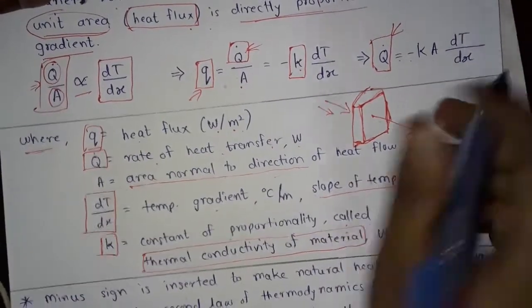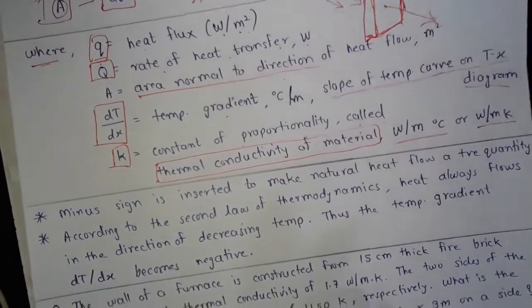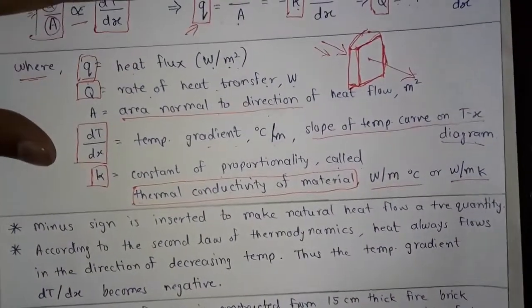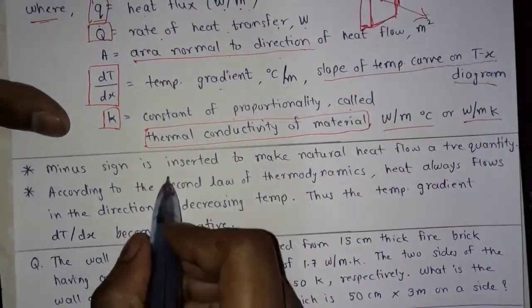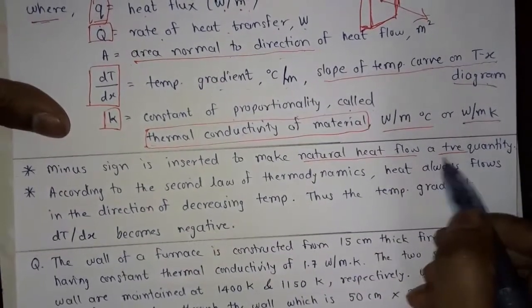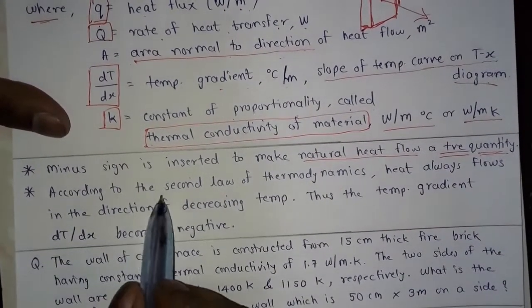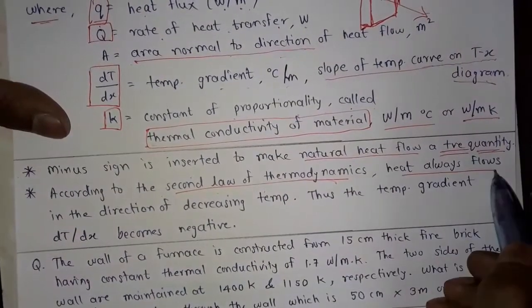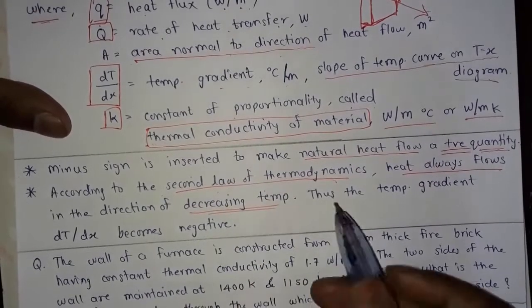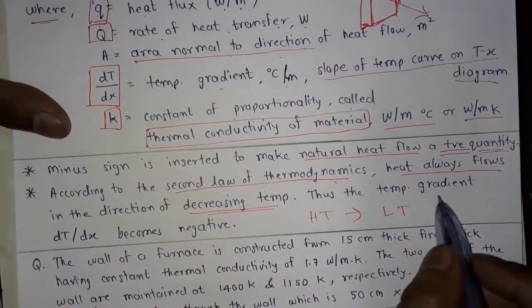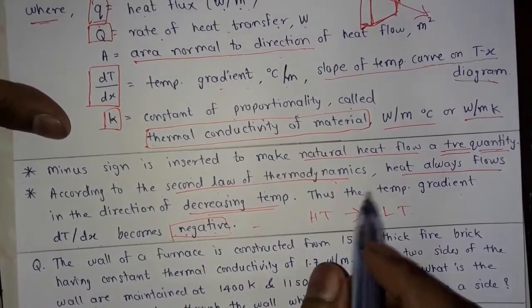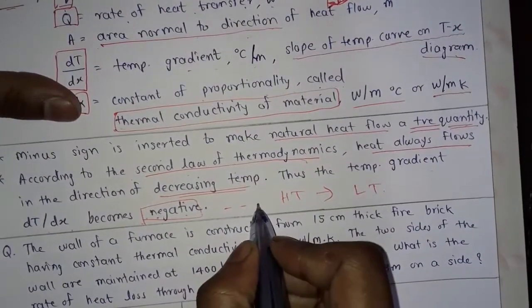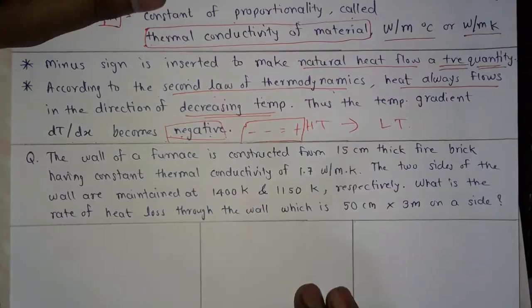In the equation there is a minus sign. This minus sign is inserted to make the natural heat flow a positive quantity. According to the second law of thermodynamics, heat always flows in the direction of decreasing temperature — from high temperature to low temperature — so the temperature gradient dT upon dx becomes negative. To make it positive, we include this minus sign, so minus times negative becomes positive.